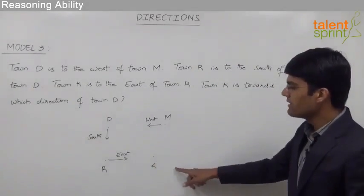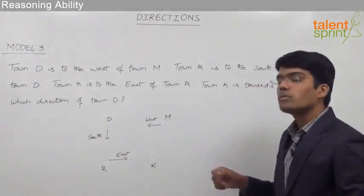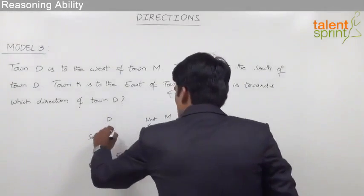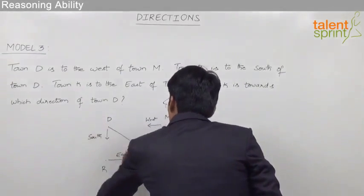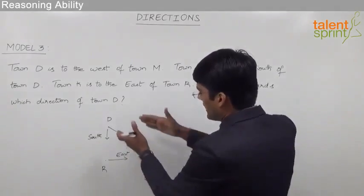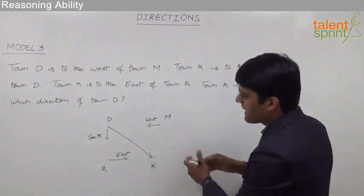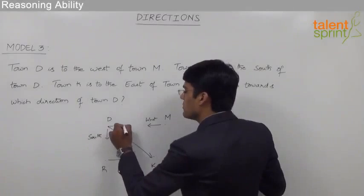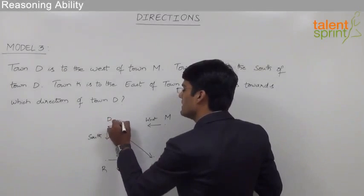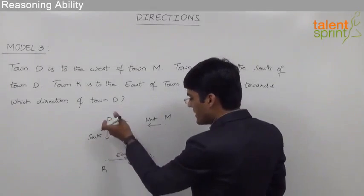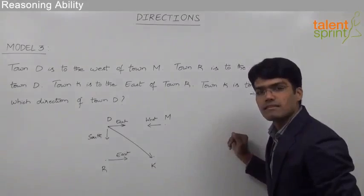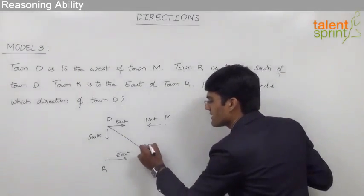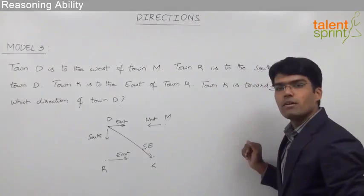The question is: town K is towards which direction of town D? That means town K is in which direction of town D. As you can observe, when we try to reach town K from town D, we have to move in this particular direction. As this comes in between the south and the east of town D, this can be taken as south-east. So we can say that town K is towards the south-east direction of town D.